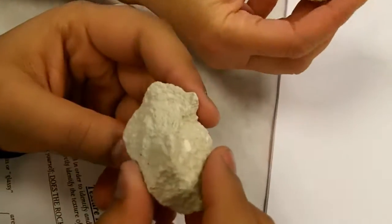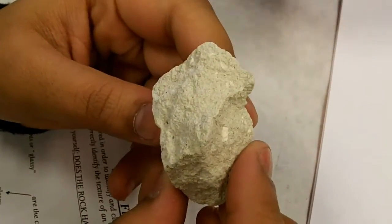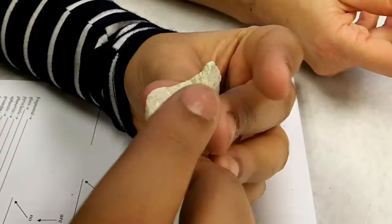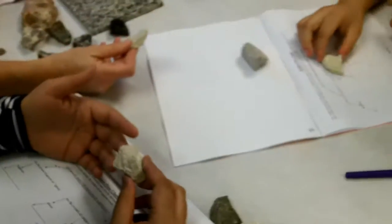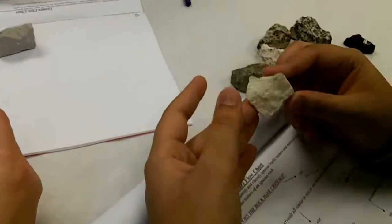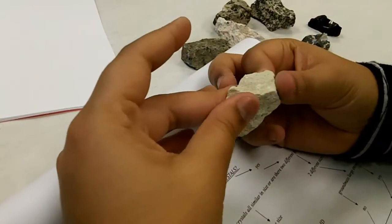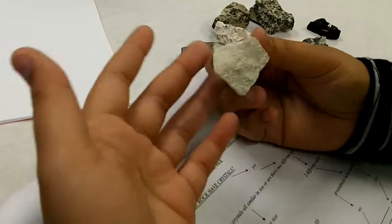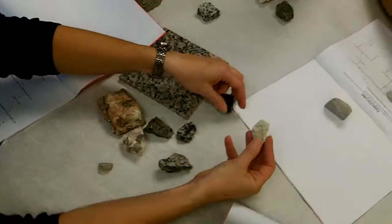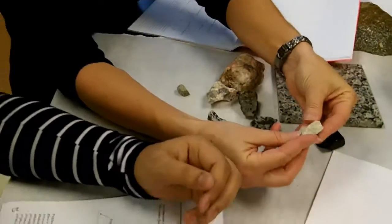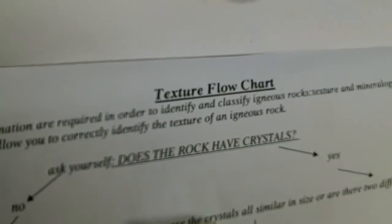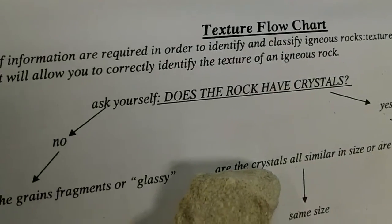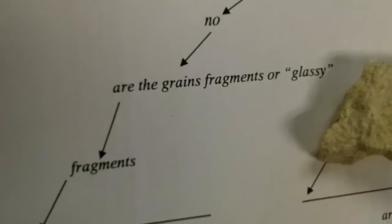This next one is probably one of the trickiest. Let's go through the flowchart together. Does this rock have crystals? No. What's our second question for the 'no' branch? Is it fragments or is it glassy? Are you feeling like you're rubbing off little bits of it — does it feel like it's falling off on your hands? It is. When we looked at the glassy rock, that one was not falling off. So this is a fragmental rock. The texture here is fragmental. This rock is made up of ash that has been welded together after it erupted from a volcano.